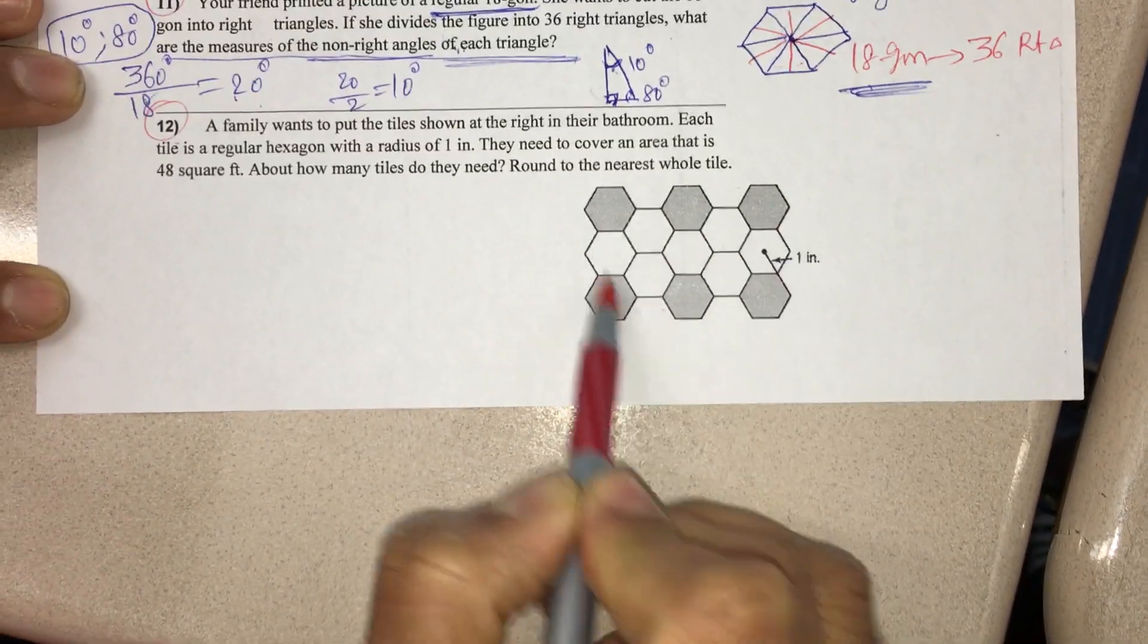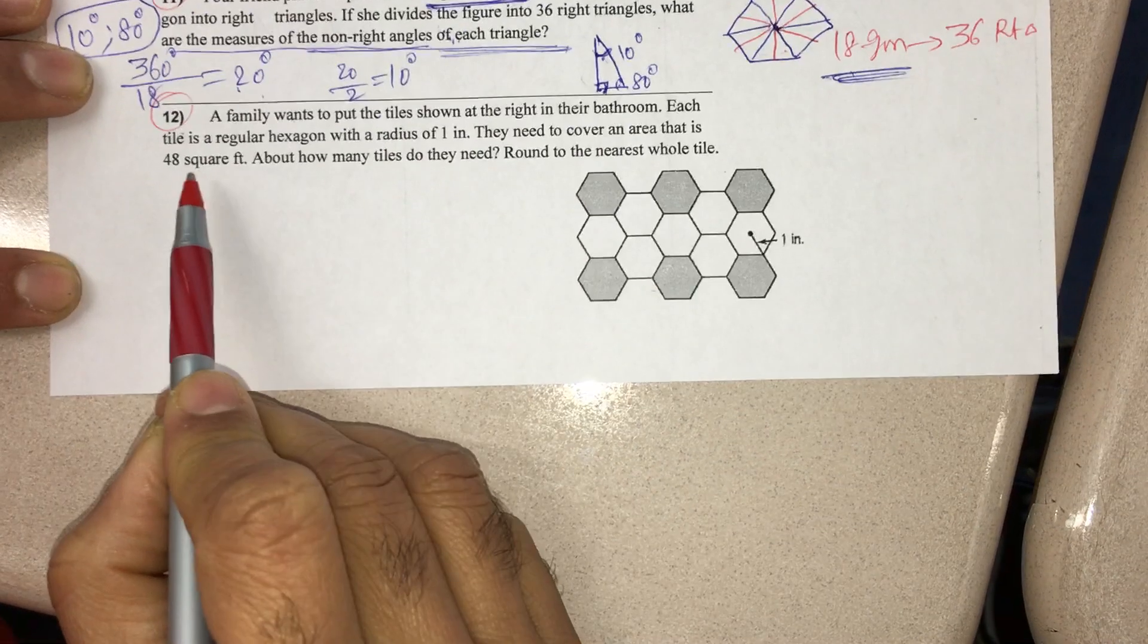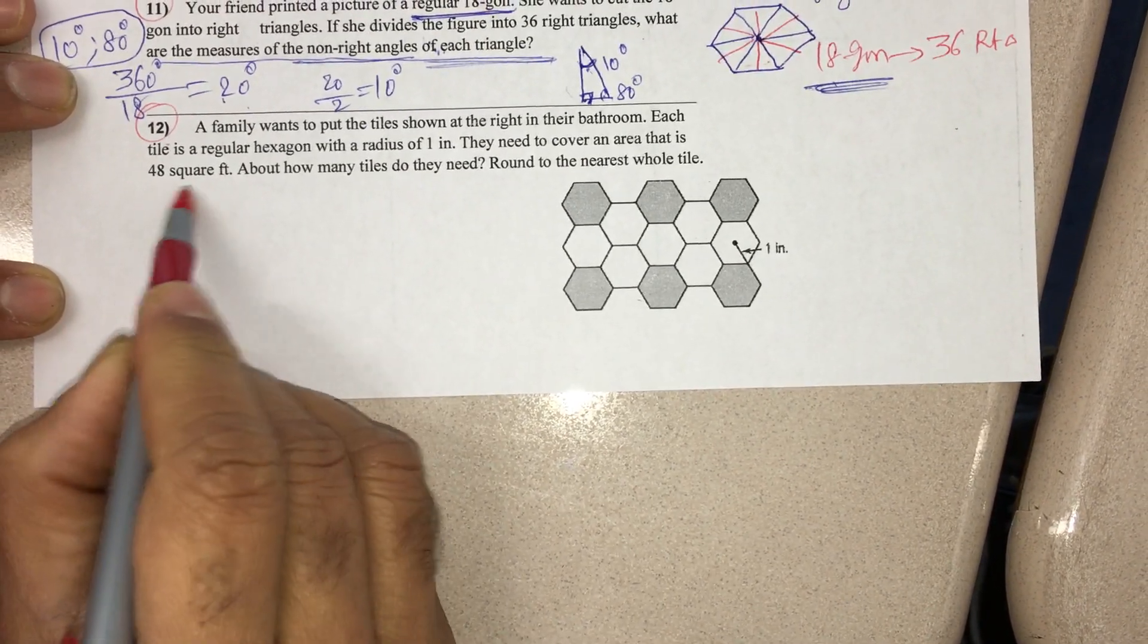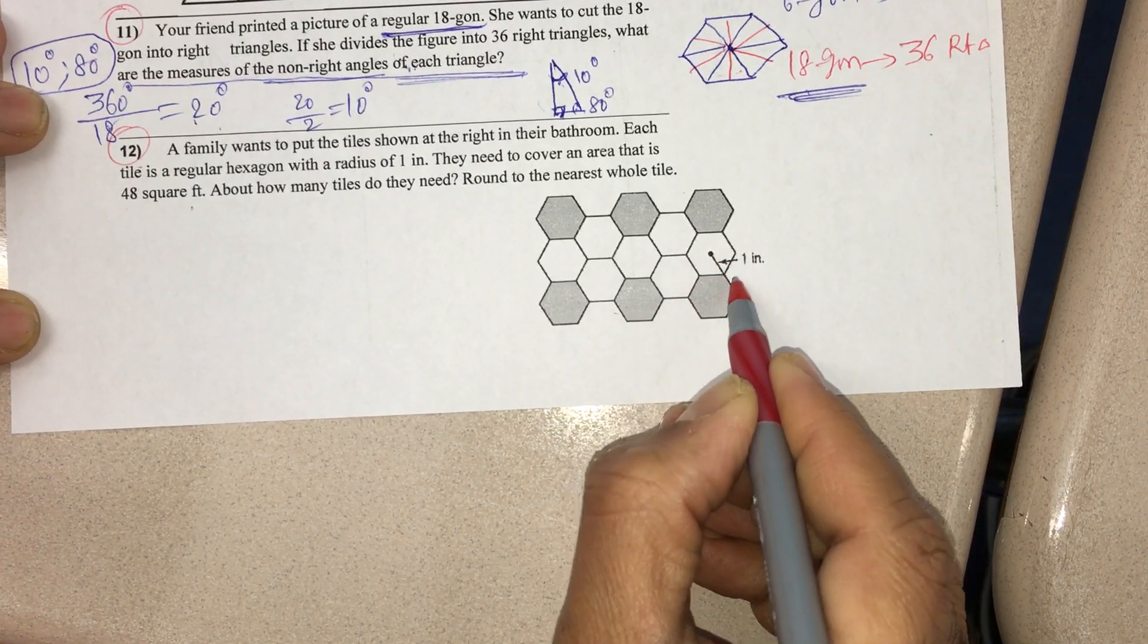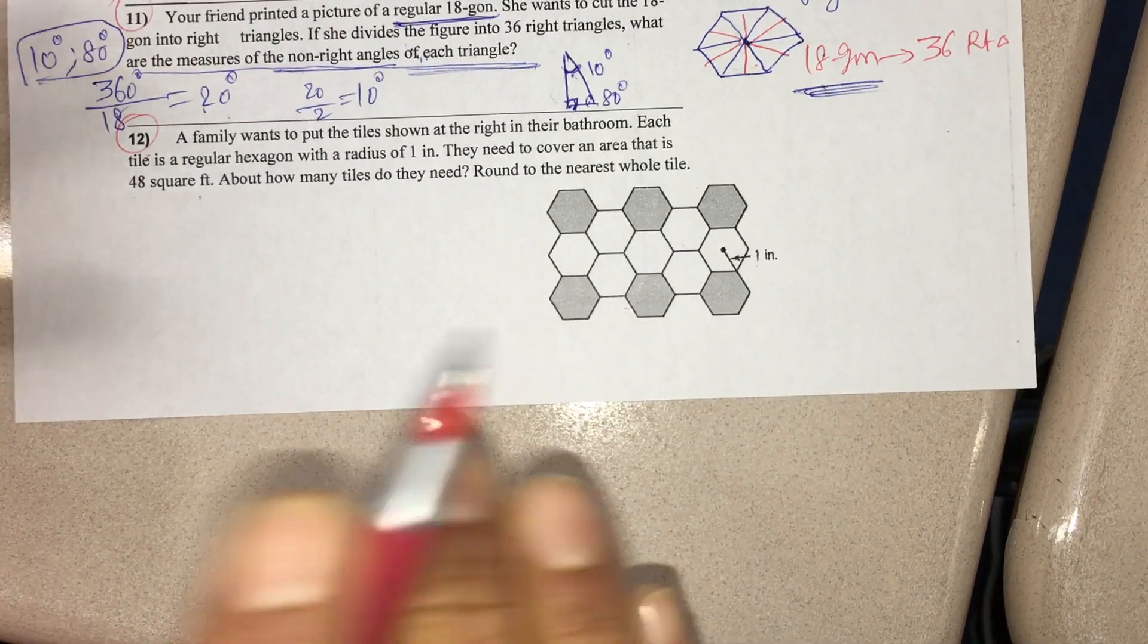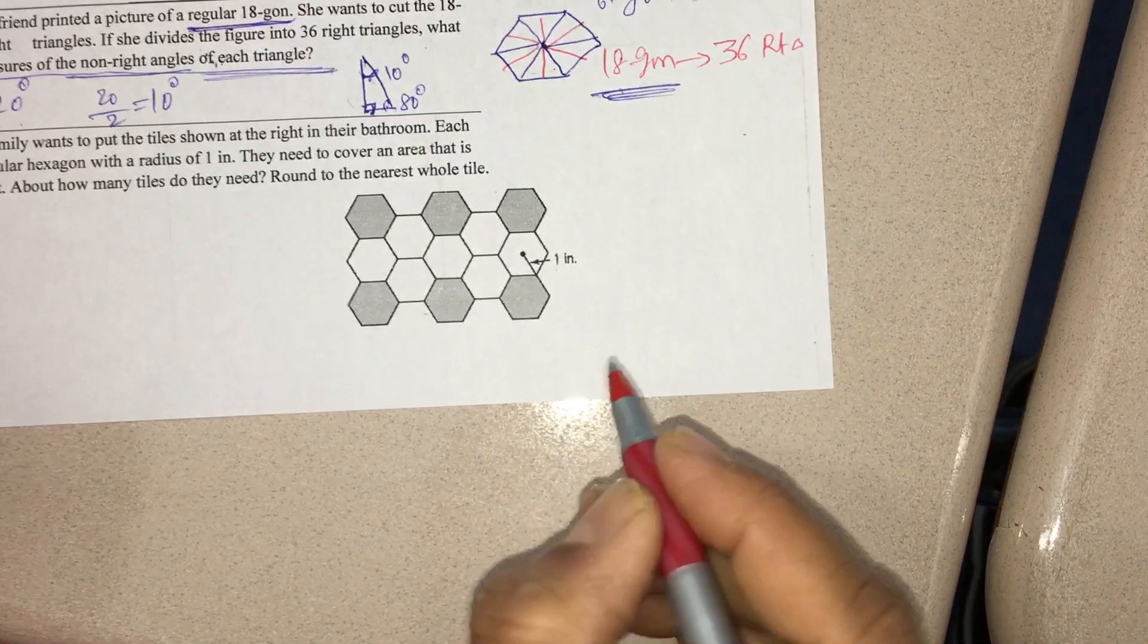Here, a family wants to spread these tiles in their bathroom. How many of this type of tiles are required if the total area is 48 square feet and each tile has a radius of 1 inch? That is the given information. For that, we have to proceed like this.